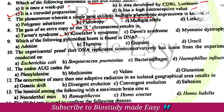The phenomenon wherein a single gene exhibits multiple phenotypes is pleiotropy. An extra copy of the X chromosome results in Klinefelter's syndrome. Which of the following pyrimidine bases is found in DNA? Adenine is a purine and guanine is a purine.